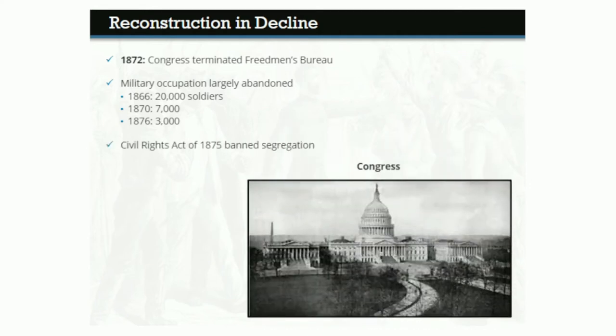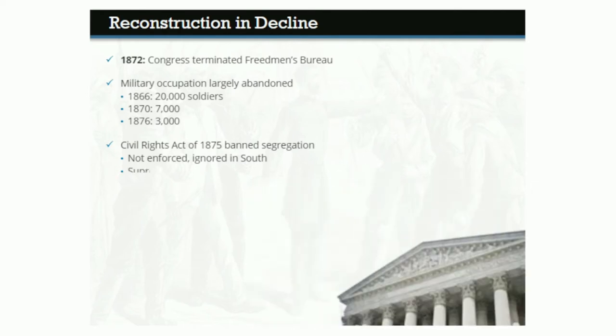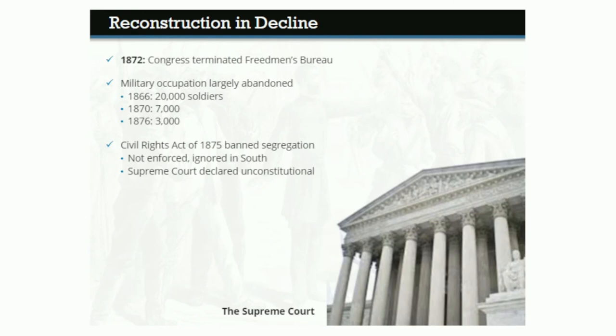Congress did pass the Civil Rights Act of 1875, which banned segregation in transportation, public facilities, and on juries — the last major piece of Reconstruction legislation to be passed. But the federal government did little to enforce the law, and it went largely ignored in the South, where segregation was becoming the rule. In 1883, the Supreme Court would declare the Civil Rights Act unconstitutional.